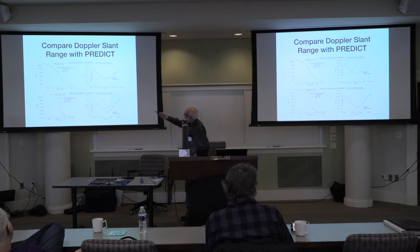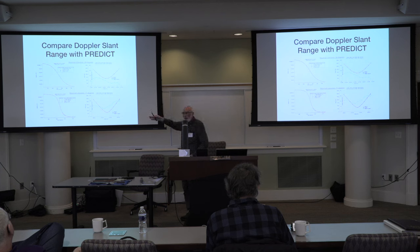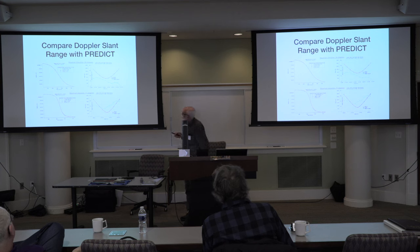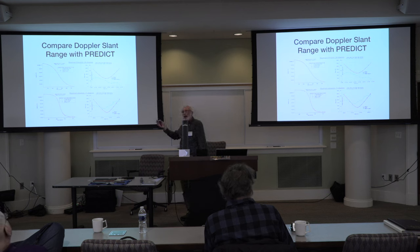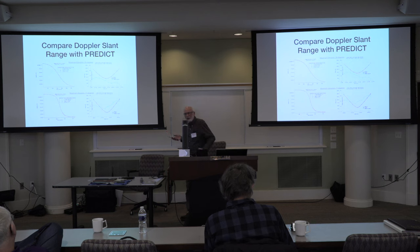We have two passes here. One is a low-elevation pass at about 24 degrees max elevation; the lower one is 71 degrees. You can get an idea and see the change in the shape of the Doppler curve. On the right-hand side are the slant-range predictions compared to what PREDICT gives. They look reasonably nice if you stand back. If you look closely, the differences run from about 5 kilometers up to almost 60 in the slant range, but I didn't think that was too bad for the approximation we did.